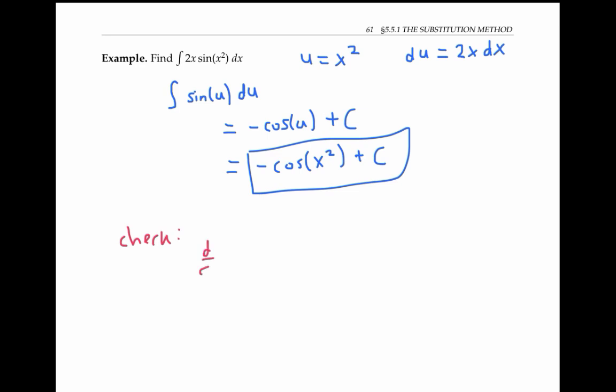If we take the derivative of negative cosine of x squared plus C, then the derivative of a constant is just zero. So we have the derivative of negative cosine, that's equal to sine of the inside function x squared times the derivative of the inside function using the chain rule. And we do in fact get back to the integrand that we started with.